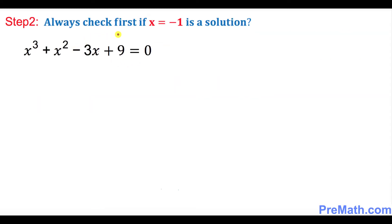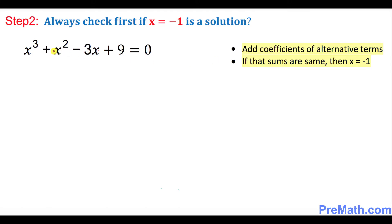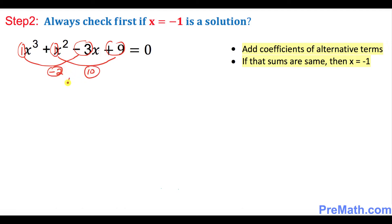Now we're going to check whether x = -1 is a solution. The rule says that if you add the alternate coefficients — the coefficient of x³ is 1, plus the coefficient of x is -3, that gives -2 — and then 1 + 9 (the alternate terms) gives 10. Since -2 and 10 are not equal, x = -1 is not a solution either, so we rule it out.